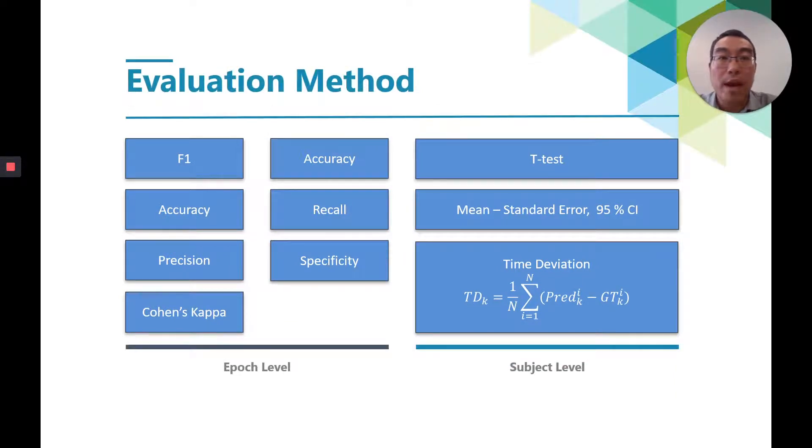In this study, we have two evaluation strategies: the sleep epoch-wise and also subject-level evaluation. We also proposed a new metric called time deviation to understand how algorithms systematically underestimate or overestimate the total minutes of each sleep stage on population level. Technically, we can understand it as the mean of the biases.